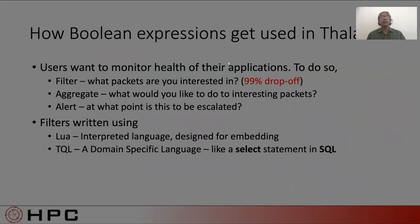How do Boolean expressions get used in Thalamus? Let's say that you are a user of Thalamus. The first thing you do is to write a filter. A filter is a way of expressing whether a packet is of interest. The good news is that in most cases, most packets are not of interest. That's because you are looking for deviations from the norm. But this is also where optimizing filters becomes important. It is the gatekeeper to subsequent computations.